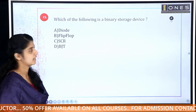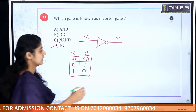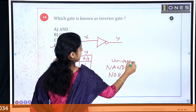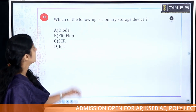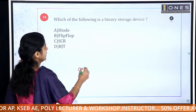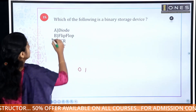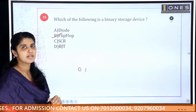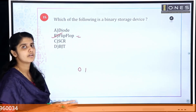The NOT gate is done. Next: universal gates — NAND and NOR are universal gates. Following that: which of the following is a binary storage device? Among diode, flip-flop, SCR, and BJT — the answer is flip-flop, because diode, SCR, and BJT are semiconductor devices, while the flip-flop is an astable multivibrator where 0 and 1 storage is possible.